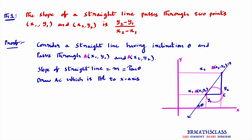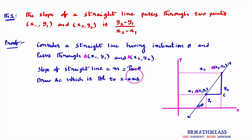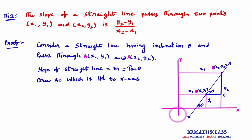Observe line AC and the x-axis — they are parallel. Since they are parallel, the straight line acts as a transversal. We know that in a transversal, corresponding angles are equal. That means if the inclination angle is theta, then the angle at A in triangle ABC is also theta.